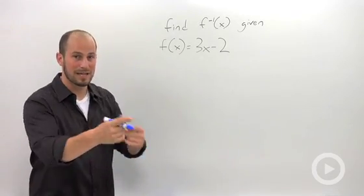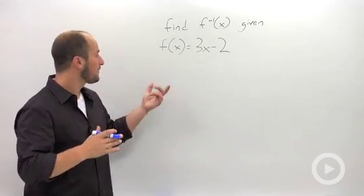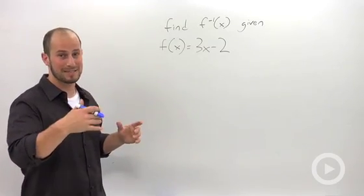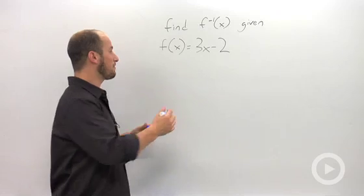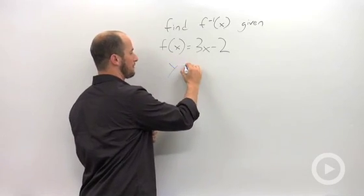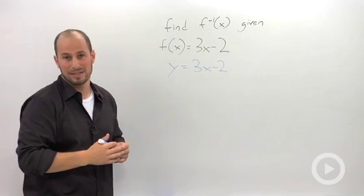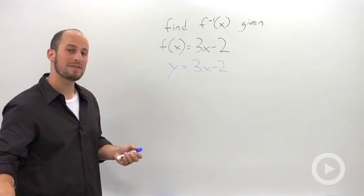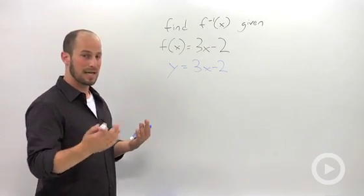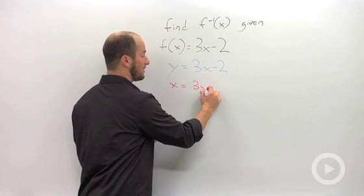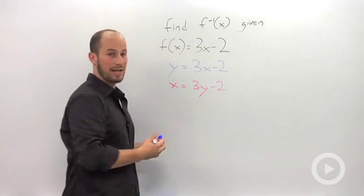How we find an inverse is by switching our x and our y. For this particular problem we don't have a y, but what we need to remember is f is the same thing as y. So just by replacing f with y, 3x minus 2, I now have an equation using x and y. To find the inverse, we switch x and y's. So every time we see an x, we throw in a y. Every time we see a y, we throw in an x.